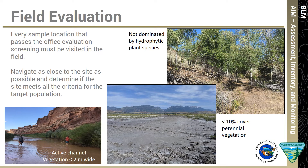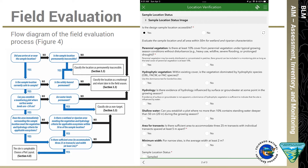Every sample location that passes the office evaluation screening must be visited in the field, either during a scouting visit or immediately before sampling. To carry out a field evaluation, navigate as close to the site as possible and determine if the site meets all the criteria for the target population. This slide shows sites that could be evaluated as non-target in the field. The lower right shows an active stream channel with only a thin line of vegetation on the bank. The center photo shows a mud flat with less than 10% cover vegetation close enough to the sample location. The upper left shows a drainage dominated by upland vegetation. Figure 4 in the protocol is a flow chart for the field evaluation process. The Location Verification Survey 123 form also assists with field evaluation. Both guide you through the considerations needed to determine if a site is sampleable.